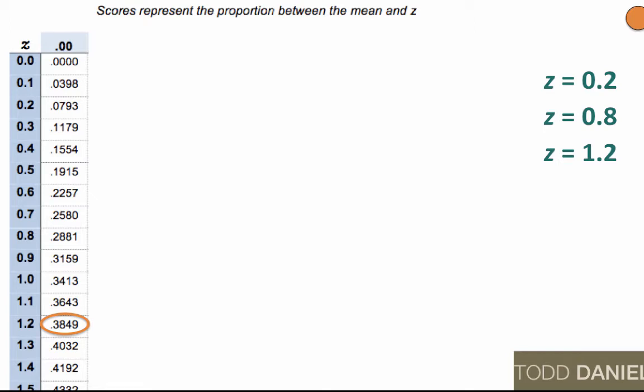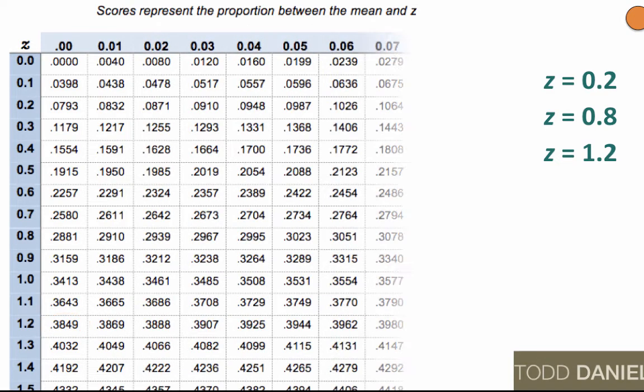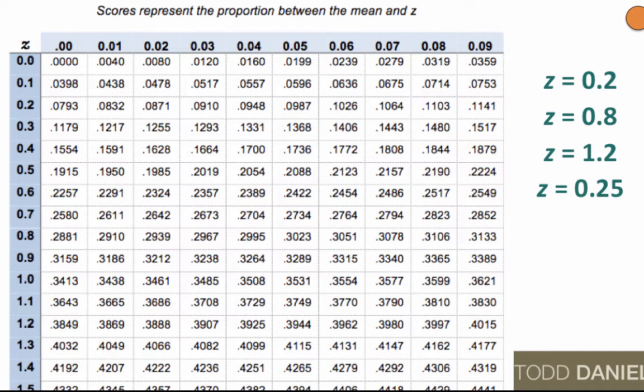You may also notice that the z-scores only go to one decimal point. What if you want to find z-scores that go to two decimal points? For that, we need the rest of the table. You find the z-score for the first decimal point in the blue column on the left labeled z. Then you find your second decimal point along the columns at the top of the table.